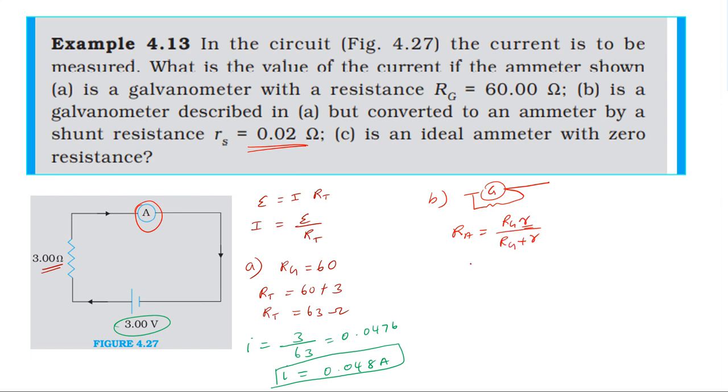So we have meter resistance 60 ohm, shunt resistance 0.02 ohm, divided by 60 plus 0.02. The effective resistance of the meter is approximately 0.01999 ohm, which we can round to 0.02 ohm.